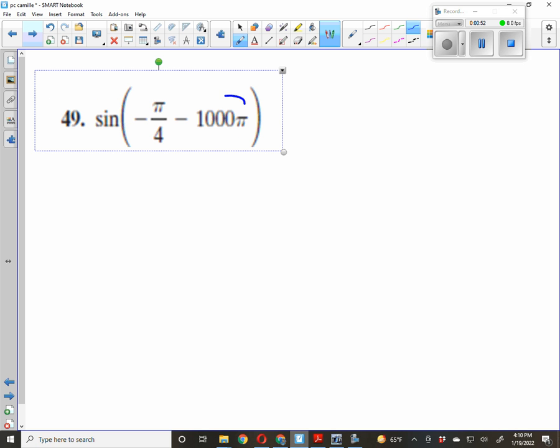All right, this right here, whether you add or subtract some multiple of 2π, is irrelevant because this is a periodic function. Therefore, this is the same as the sine of negative π over 4. If you want, just look at the unit circle. That's the same as 11π over 4. That's going to be negative 1 half, just read it right off the unit circle.